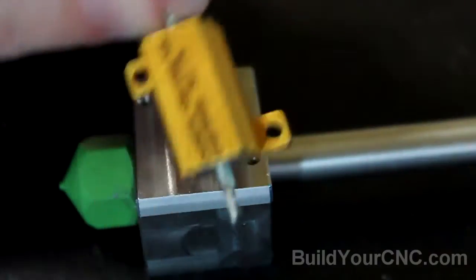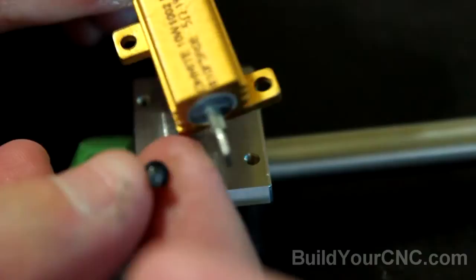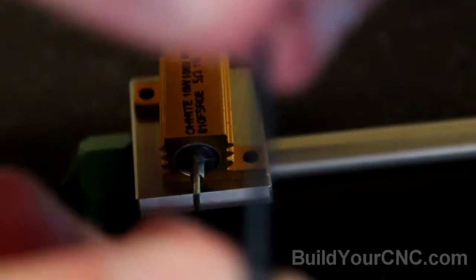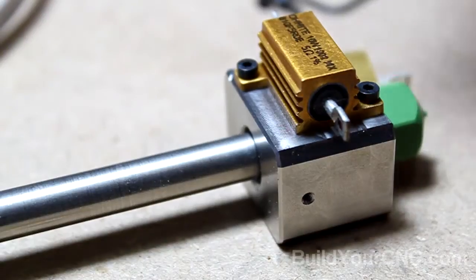Now we can install the power resistors using these little screws and the resistors themselves. There should be two holes here. These will go on with a little Allen wrench. Attach the other one.